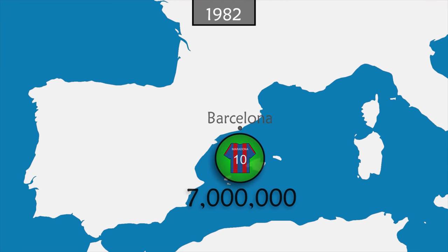In 1986, Mexico hosts the World Cup again, replacing Colombia which had withdrawn. Diego Maradona is at the top of his game. During a match between Argentina and England, he scores a goal with his hand that is validated nonetheless, becoming known as the 'Hand of God.' Four minutes later he scores one of the most beautiful goals in history, known as the 'Goal of the Century.' In the final, Argentina wins against West Germany. Four years later, during the World Cup in Italy, West Germany takes its revenge by beating Argentina in the final.